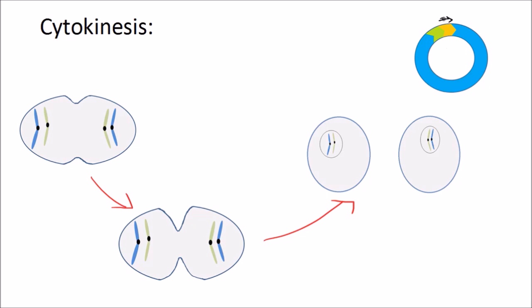Finally, we can go on to cytokinesis, which is the final stage in the cell cycle. So finally, the cytoplasm divides and the cell membrane splits to form two cells. Each one taking their own copy of the DNA with them. And these are called daughter cells.